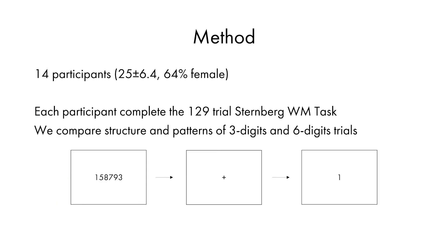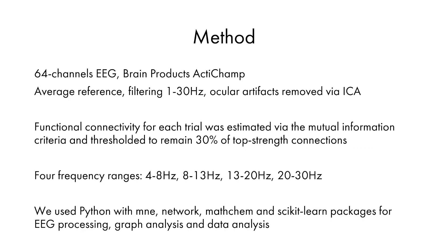To test our method, we chose data recorded during the Sternberg working memory task. This task consists of two steps: on the first step, a set of numbers was presented to the participant; on the second, after a short pause, only one number was presented, and the participant was required to answer whether or not that number had previously appeared in the set. During the Sternberg task, 64-channel EEG was recorded. For each trial, the functional activity matrix was estimated via mutual information, and graphs were constructed with the strongest 30% of connections. For the 64 nodes, we have 474 data points for each network fingerprint.